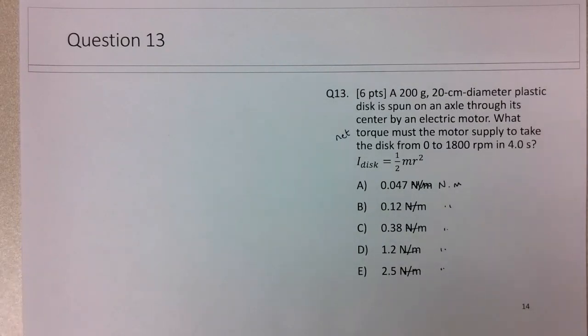Okay, so I've got a question here on a 200 gram, 20 centimeter diameter plastic disc. It's spun on an axle through its center by an electric motor. What net torque must the motor supply to take the disc from 0 to 1,800 revolutions per minute in 4 seconds?